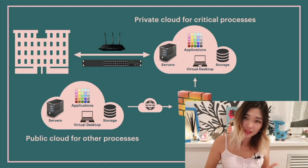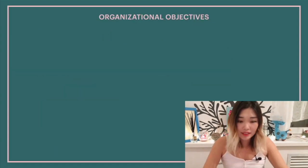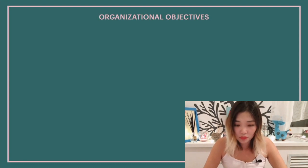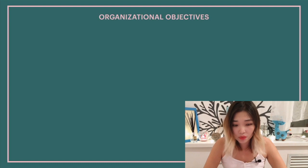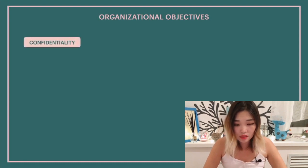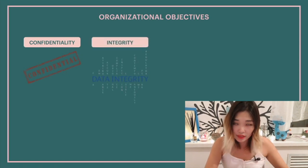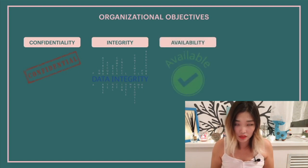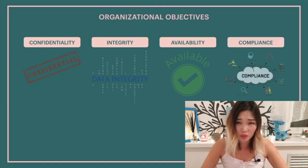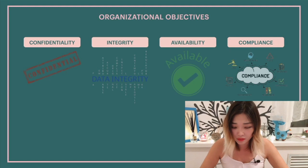Now let's talk about the risks and controls. Independently of the cloud computing models or deployment methods, the organizational objectives remain the following: it is important to preserve the confidentiality of sensitive data, to ensure the integrity of data at rest and while in transit, to ensure the availability of data and information systems, and to ensure compliance with all relevant regulations, policies, procedures, and standards.